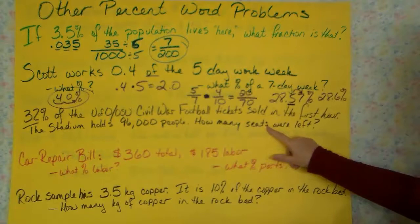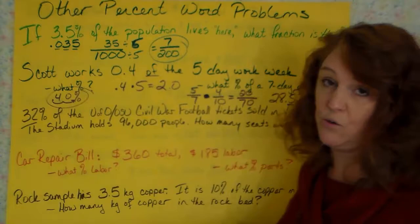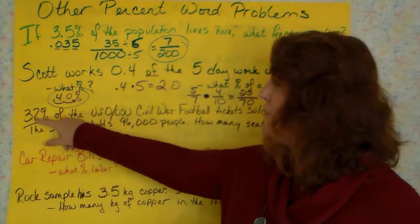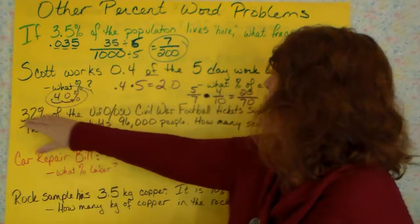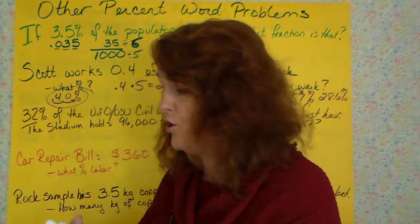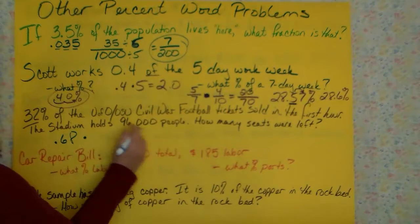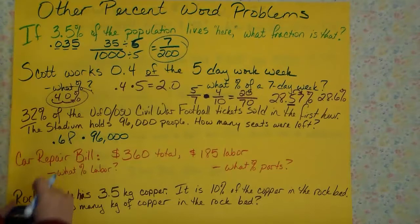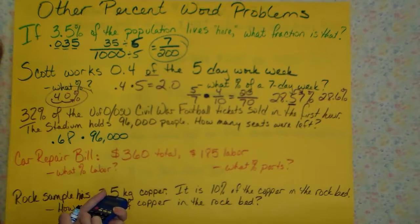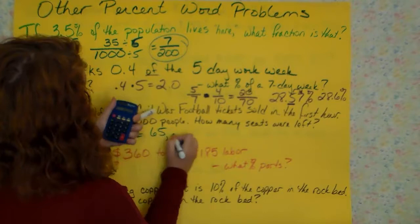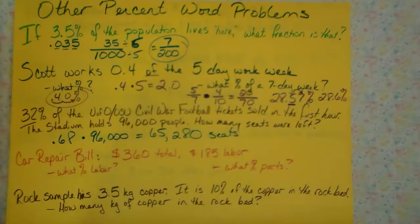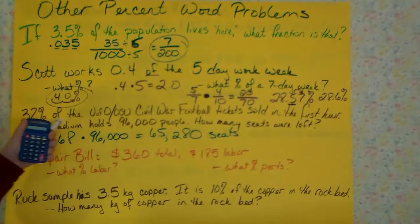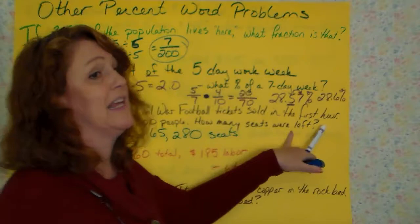But the question is asking how many seats were left, which means how many were not sold. If the only question you have to answer is how many seats were left, then subtract this from 100. If 32% were sold, what percentage was not sold? That's 68%. You subtract it from 100, 68% or 0.68 of 96,000 were not sold. And you put that in your calculator. 68 times 96,000, and that gives us 65,280 seats left. But I need you to remember to read what the question is asking and what the question is giving you.